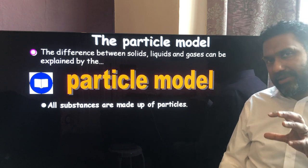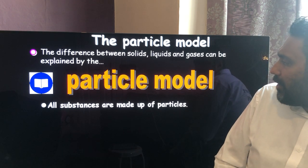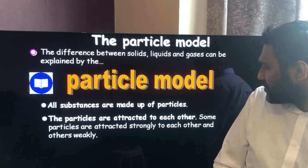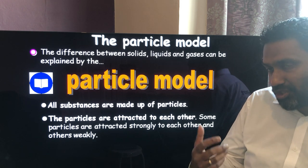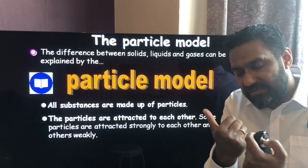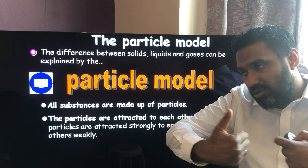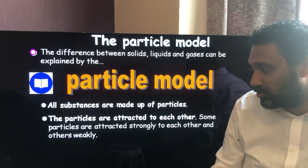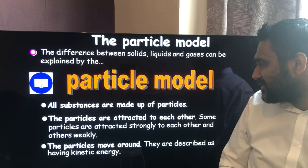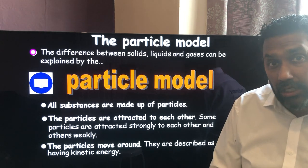The particle model is a way of drawing diagrams to represent how particles are arranged in solids, liquids, and gases. We use it to explain how substances are made up of particles too small to see even with the most powerful microscope. Particles are attracted to each other — strongly in solids, weakly in liquids, and very weakly in gases. In solids the particles stay put; in liquids they can move around; in a gas, so much energy has been put in that particles move far apart. These interparticle attractions are called intermolecular forces.